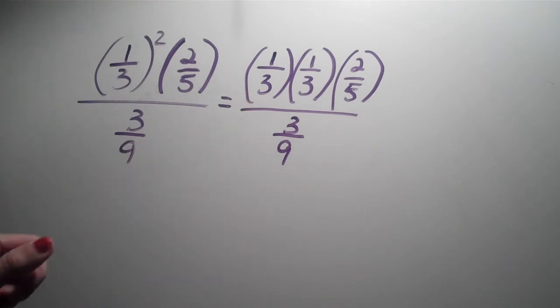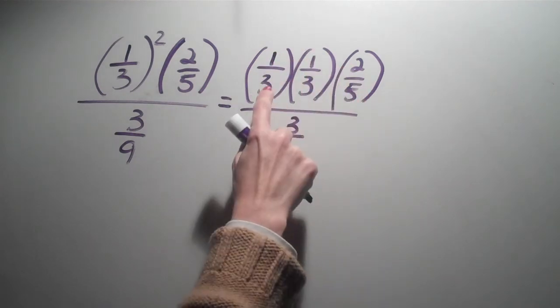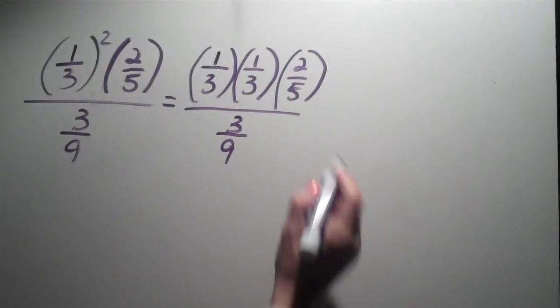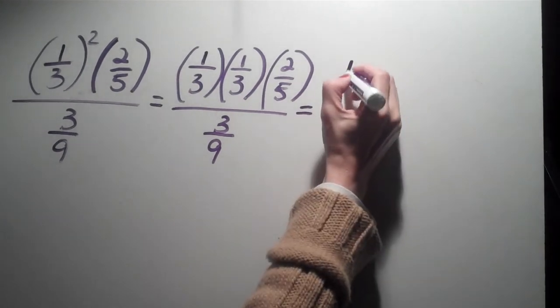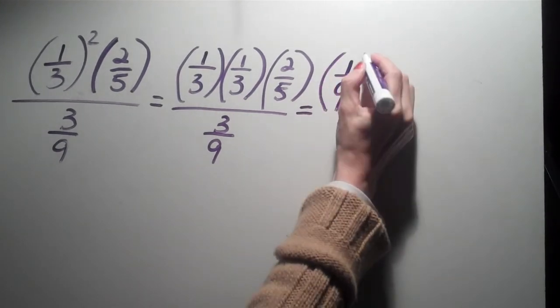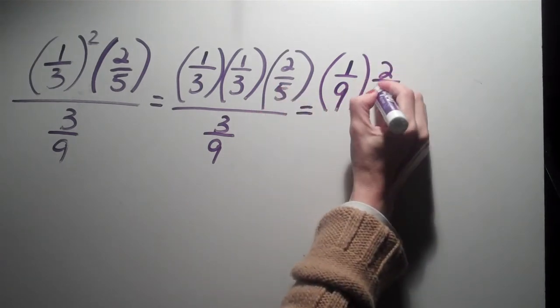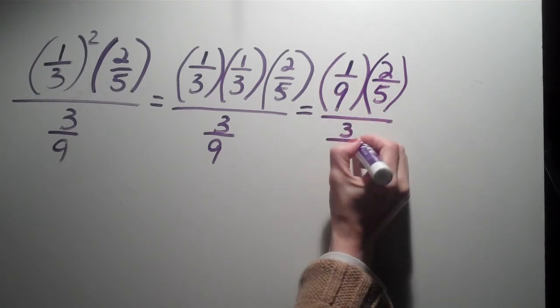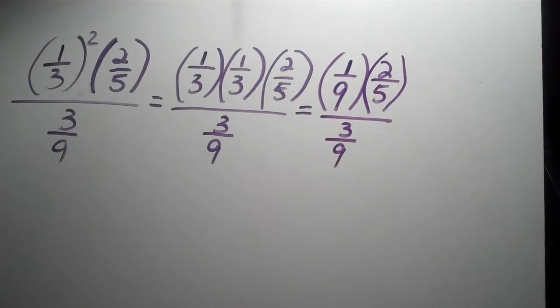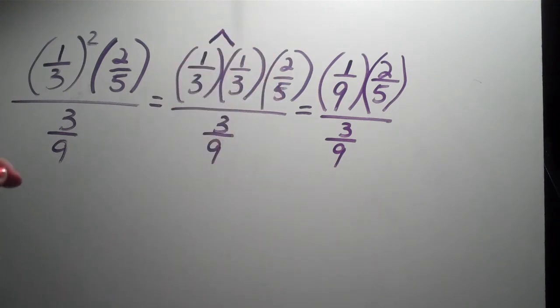But I can go ahead and simplify this further. Look at the two fractions on the top. And we can simplify that further by saying 1 times 1 is 1, 3 times 3 is 9. So what I have here is 1 over 9 times, now I'm going to add in the last fraction, 2 over 5, all over 3 over 9. All I'm doing is taking these two and multiplying them.